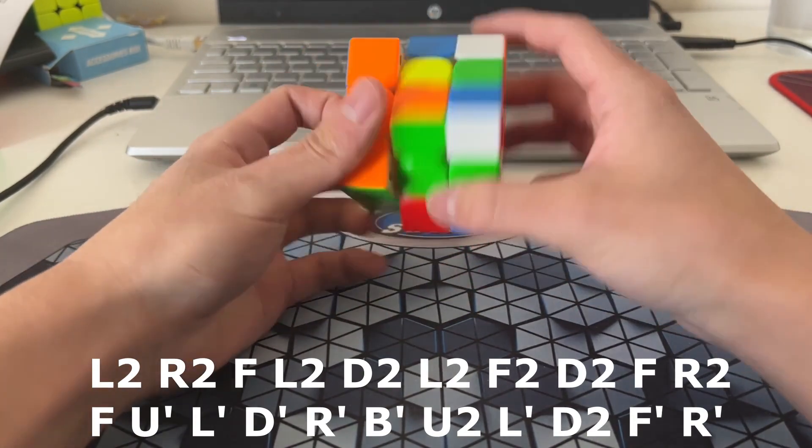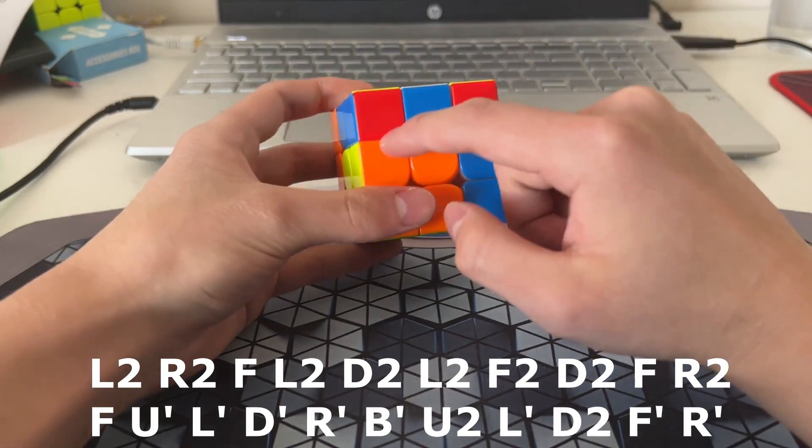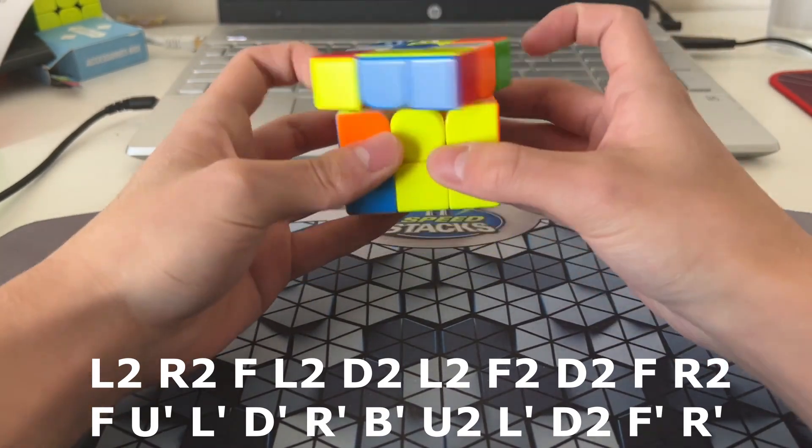I'll insert this edge, and then insert that edge, which also inserts the actual edge. And then I'll solve this pair, and then I'll solve this pair, and this pair, which is a free pair.